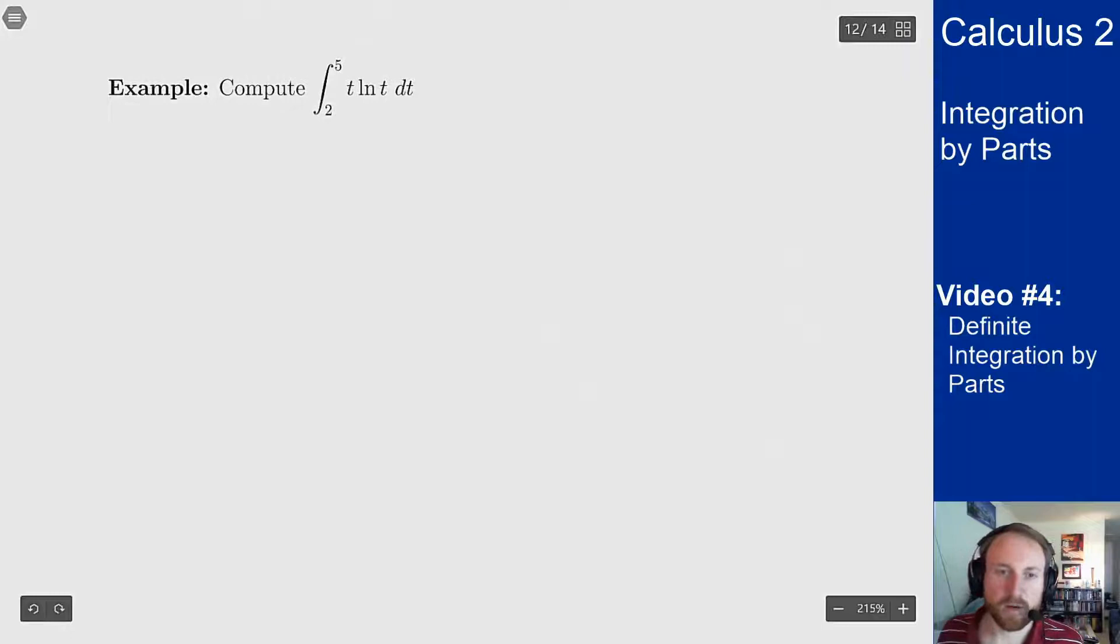So here's an example. Compute the integral from 2 to 5 of t ln of t dt. It's a product, so let's try integration by parts.